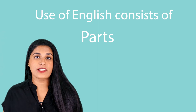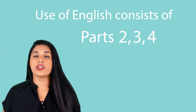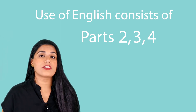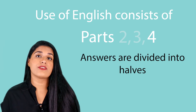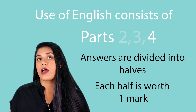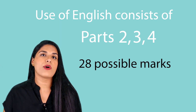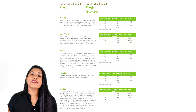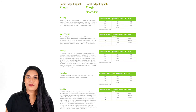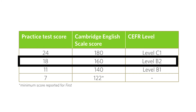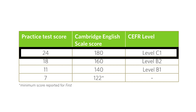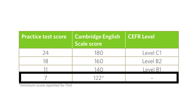The use of English section consists of parts 2, 3, and 4 of the reading and use of English paper. Correct answers in parts 2 and 3 are worth one mark each. In part 4, answers are divided into halves — if you get one half correct, you will receive one mark; if you get it completely correct, you will receive two marks. There are 28 possible marks in the use of English section. Use this table to find out which level you've achieved. You need a minimum of 18 marks to get a B2 level. Anything between 18 and 24 is B2 level, and anything above 24 is C1. If you achieve 7 or fewer marks, your performance is below B1 level.